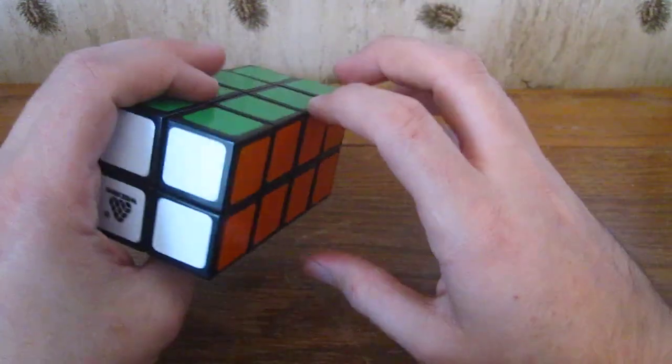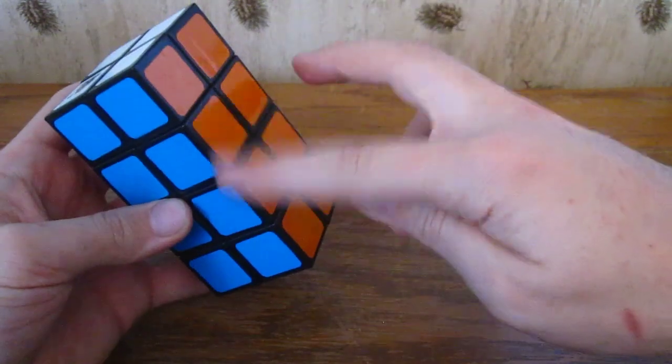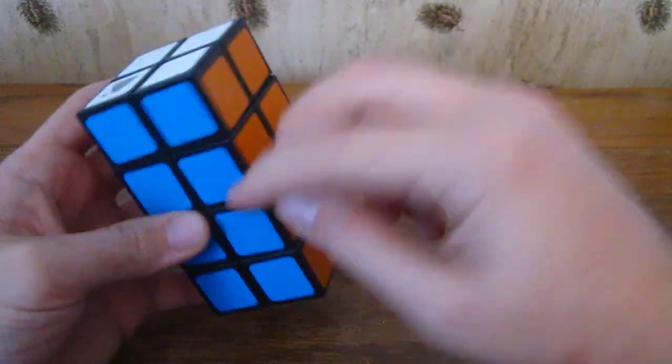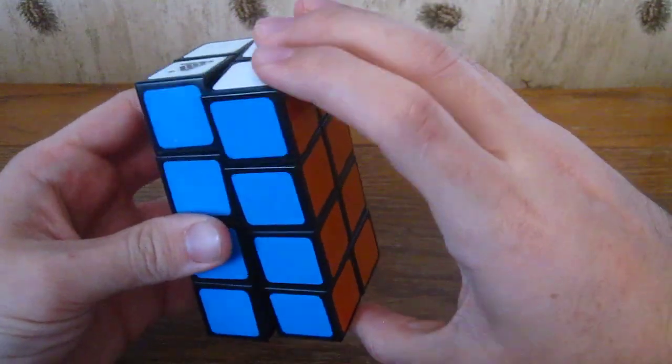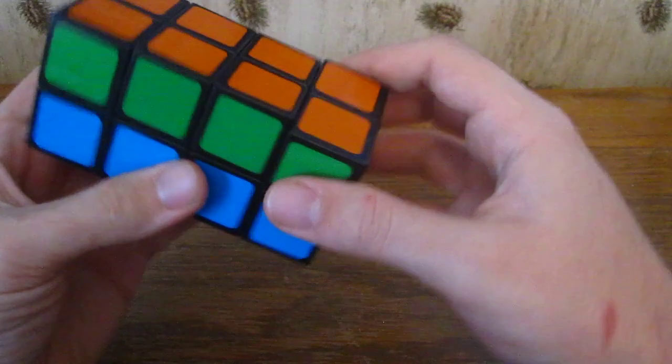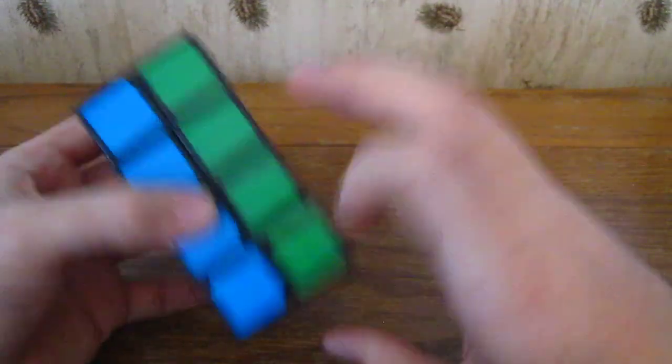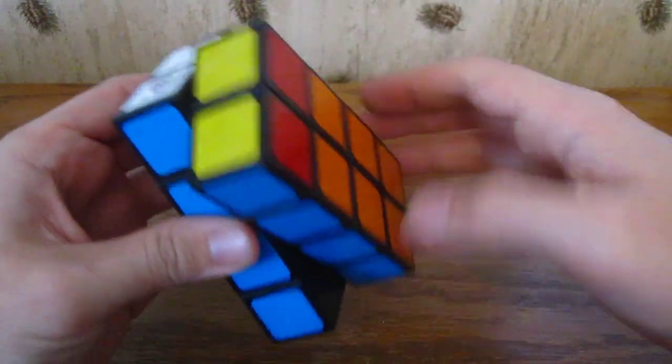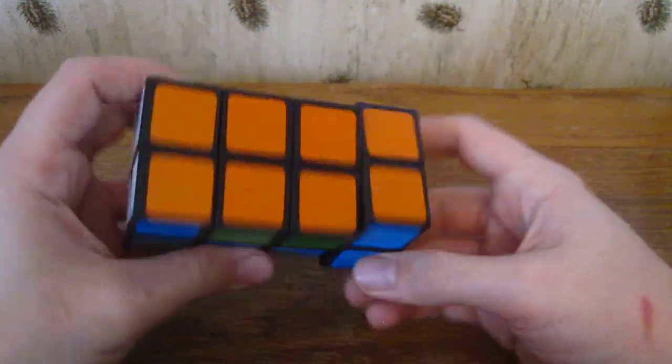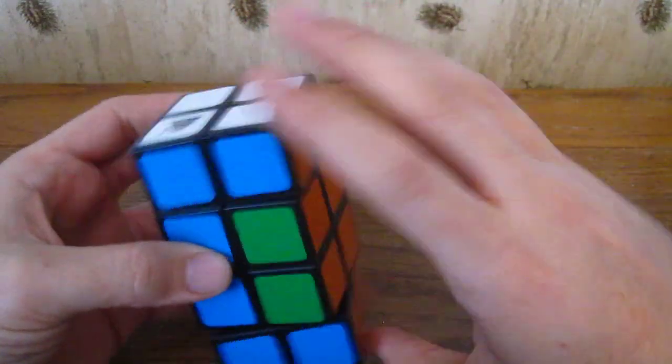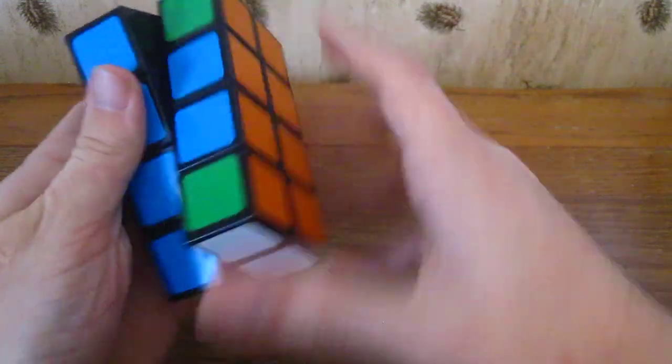I'll just show you the other case that you might have, where you have to swap these two pieces with these two pieces. You can do that by just doing this, moving over here, doing that again, moving it back and doing it again. You can see how that swapped those pieces. That's really pretty intuitive, not really an algorithm.